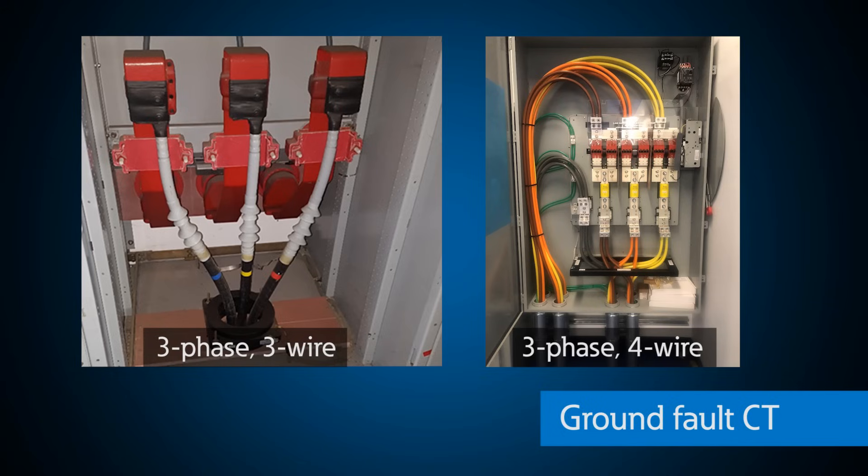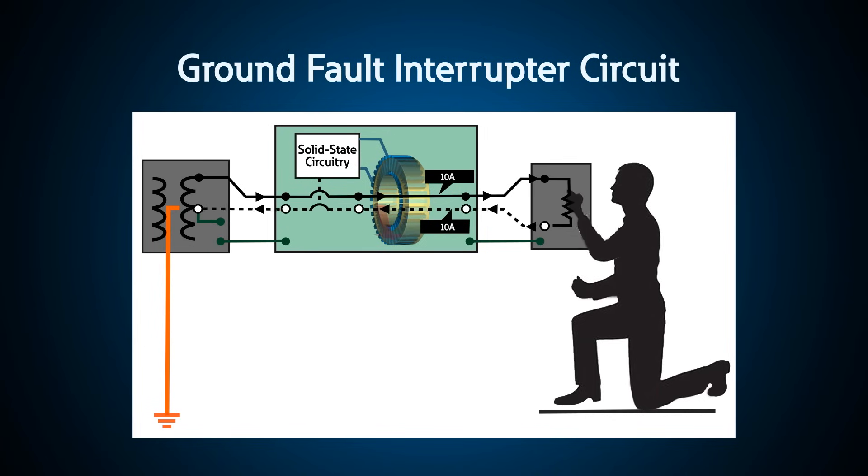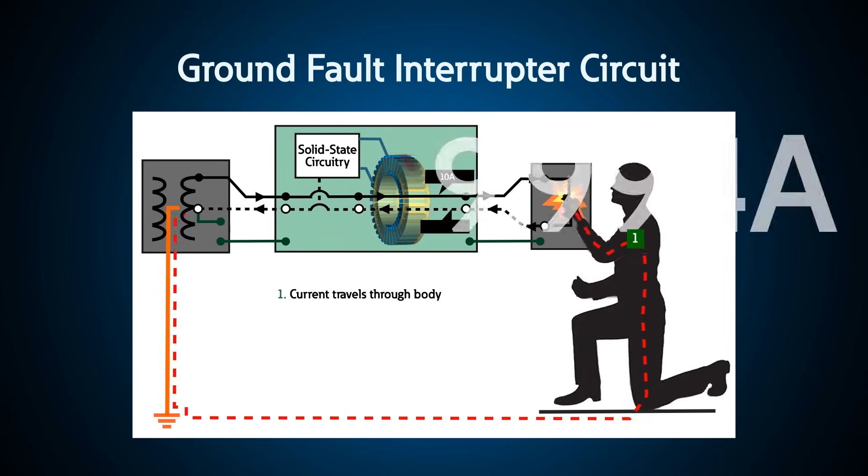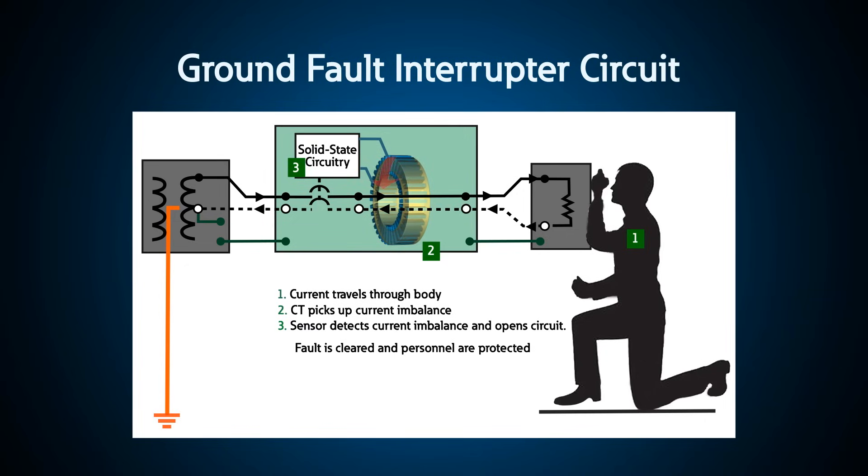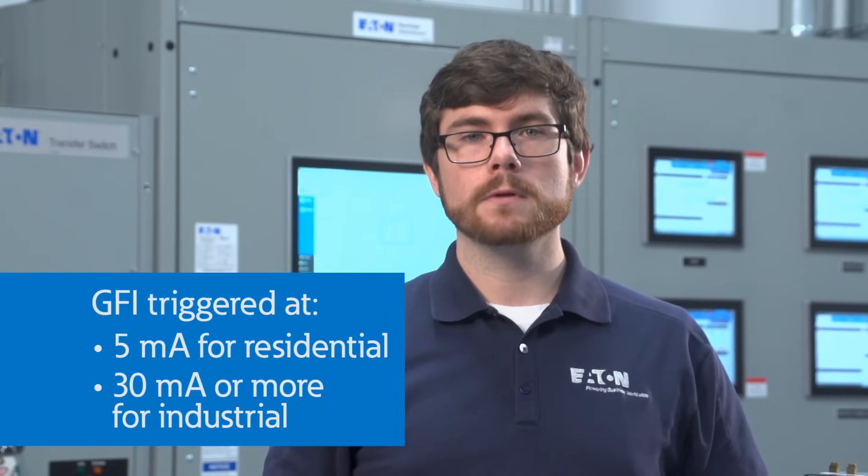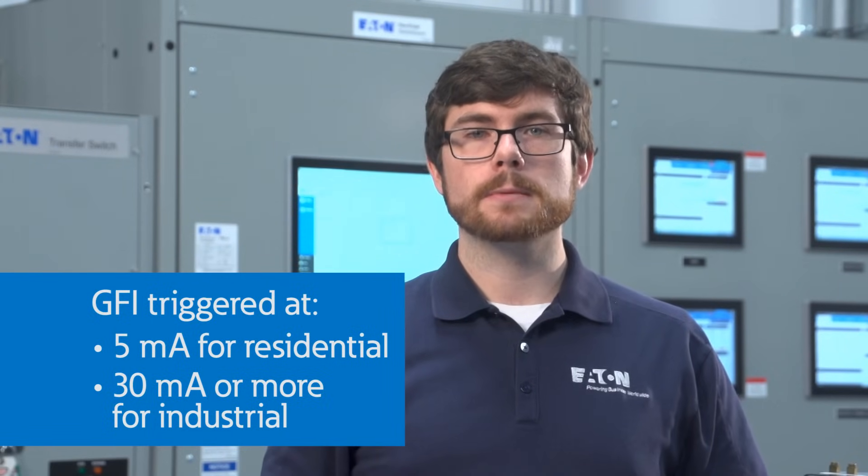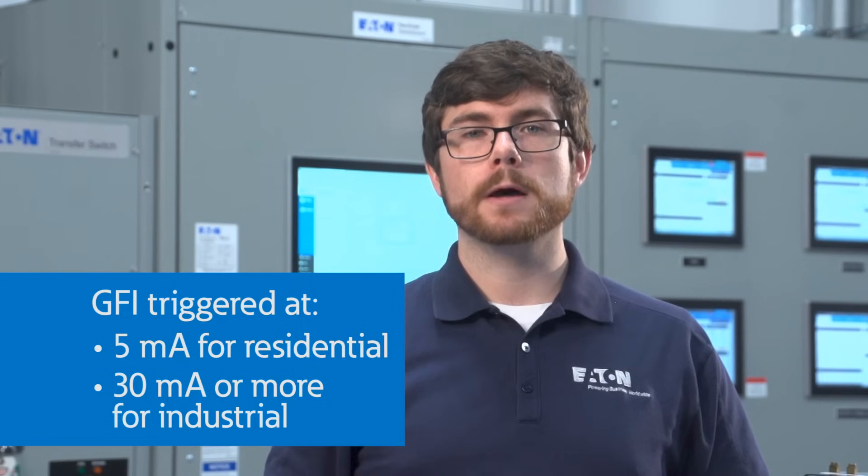All of the phases and neutral conductors go through the ground fault CT and if any residual current exists, in other words, current comes in on one of the phases but doesn't return on the other phases or neutral, then there is a ground fault. In your house, this is triggered by a 5 milliamp level and industrial plants, this may be 30 milliamps or even a couple hundred amps. Ground fault protection is generally for personnel safety in homes and equipment protection in industrial applications.